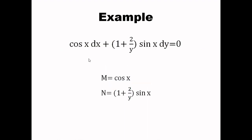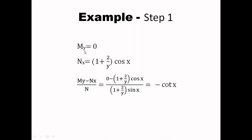Let's start an example: cos(x) dx plus (1 plus 2/y) times sin(x) dy equals 0. First we check whether it is exact. The function cos(x) is M, and all the part along with dy is N. We compute My, the partial derivative of M with respect to y, and Nx, the partial derivative of N with respect to x. As you can see, these two partial derivatives are not equal to one another — they are different.